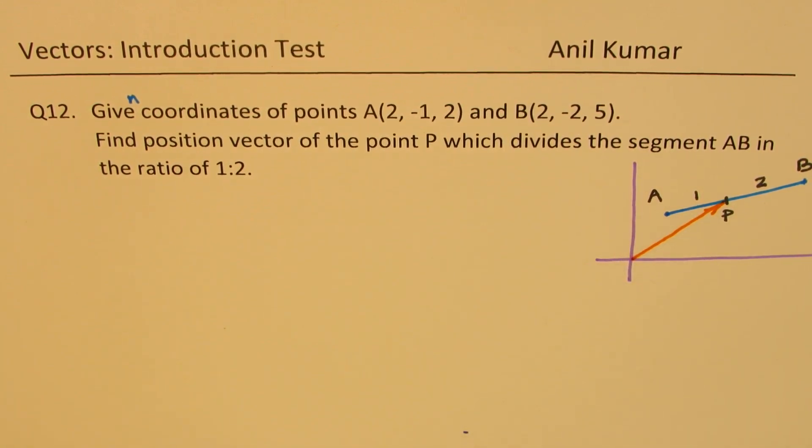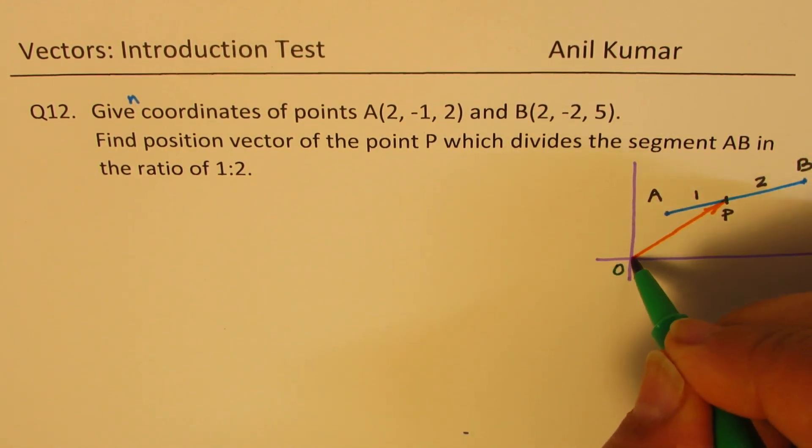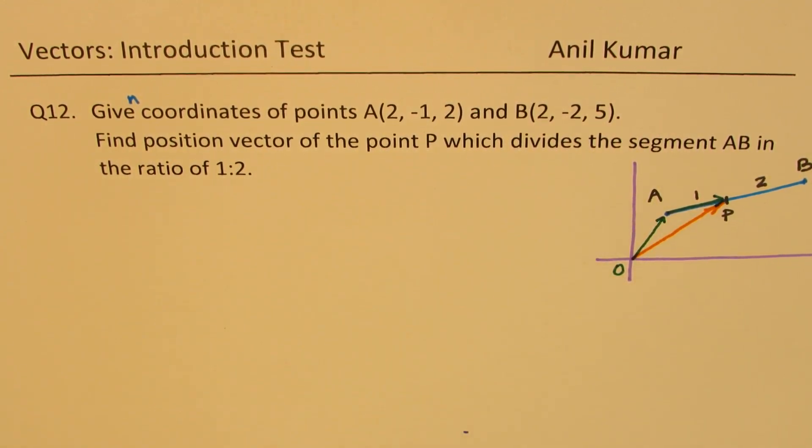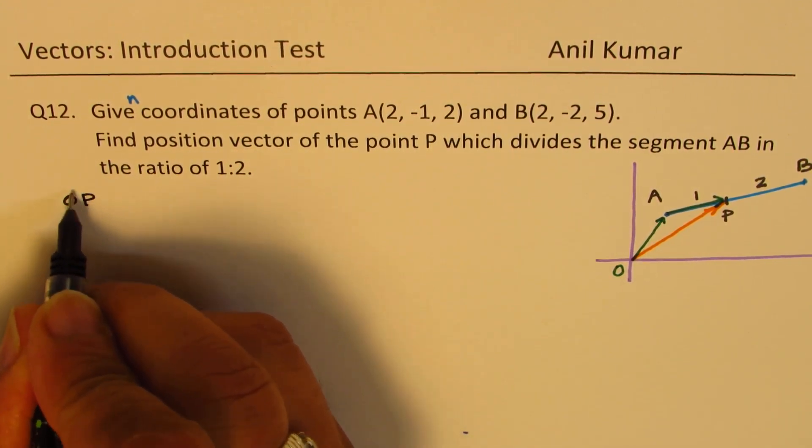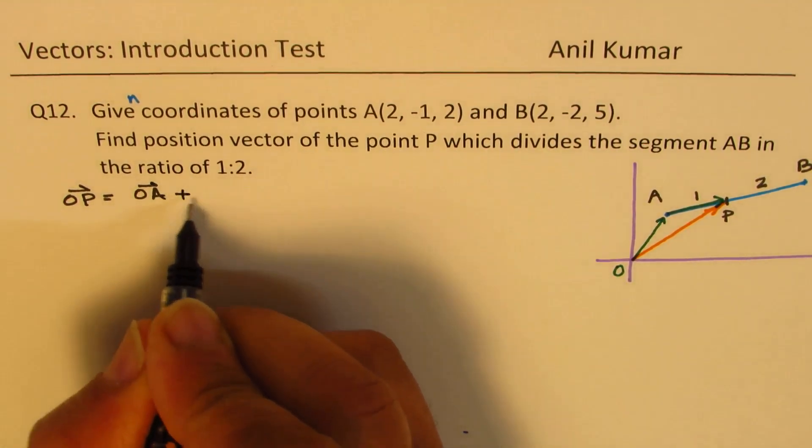OP can be written as a combination of OA plus AP. That is how we could find it. We can say that OP is basically equal to OA plus AP.